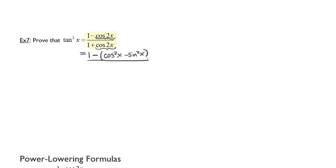So the numerator is now 1 minus the quantity cosine squared x minus sine squared x, all over 1 plus the quantity cosine squared x minus sine squared x.